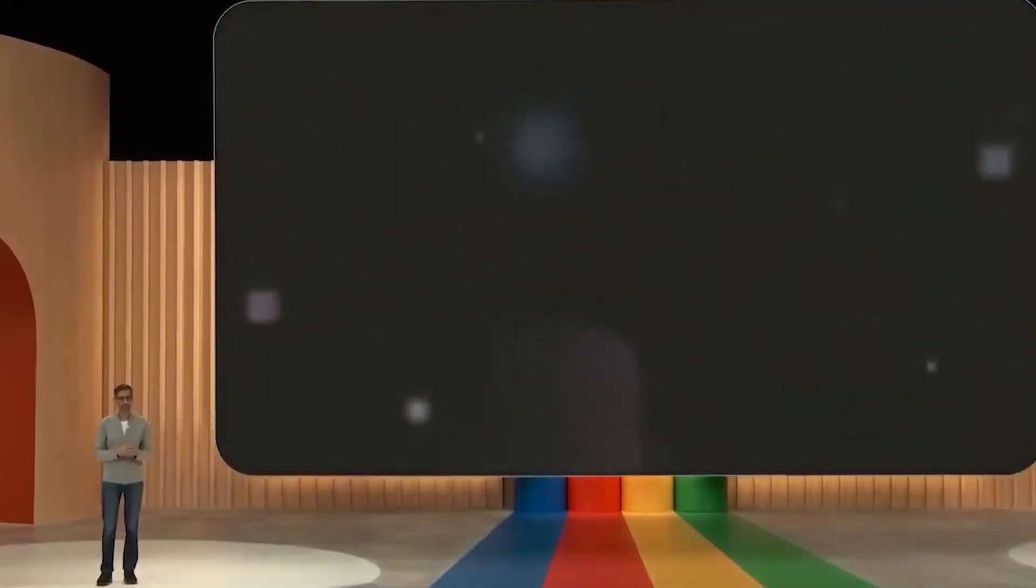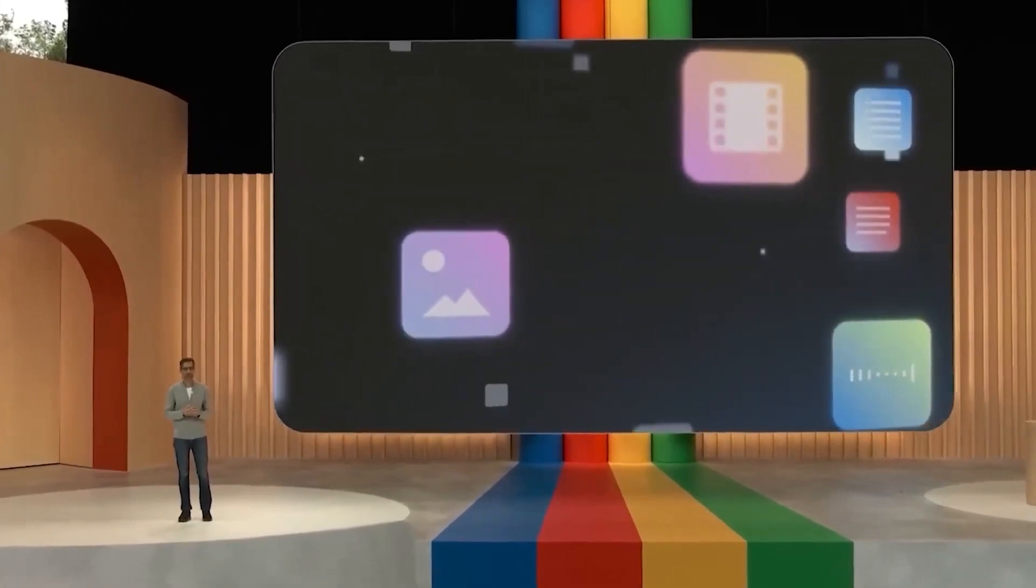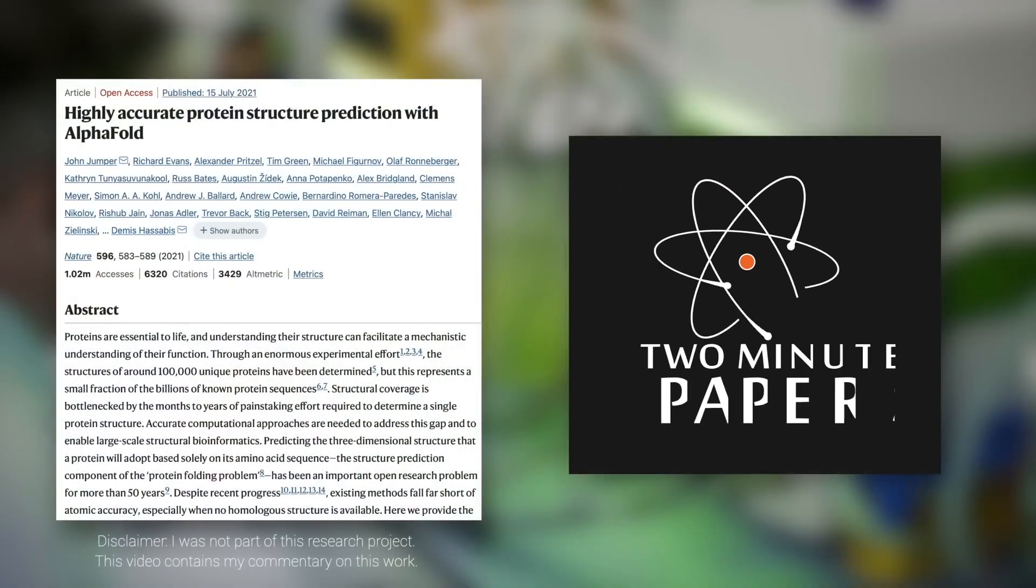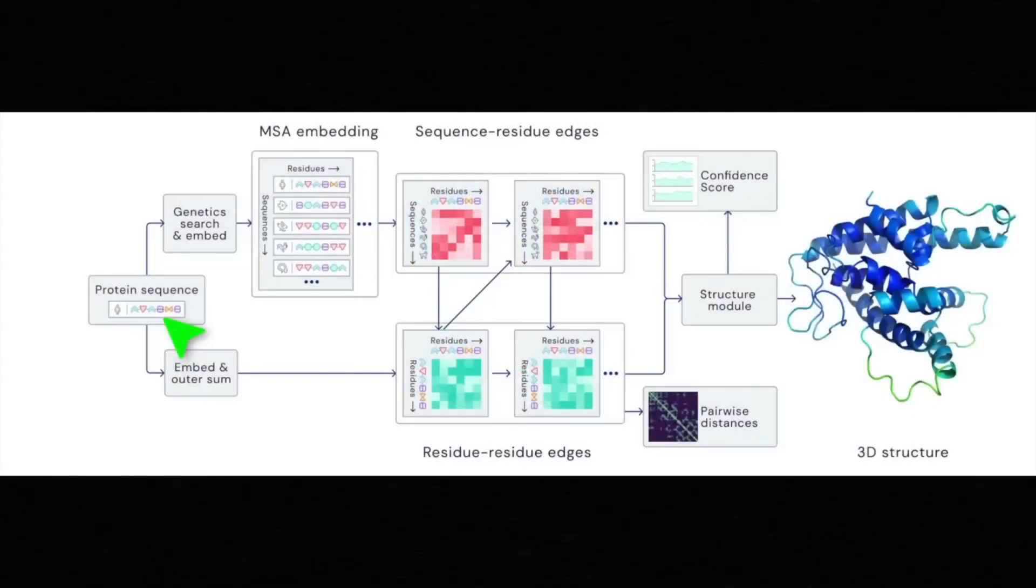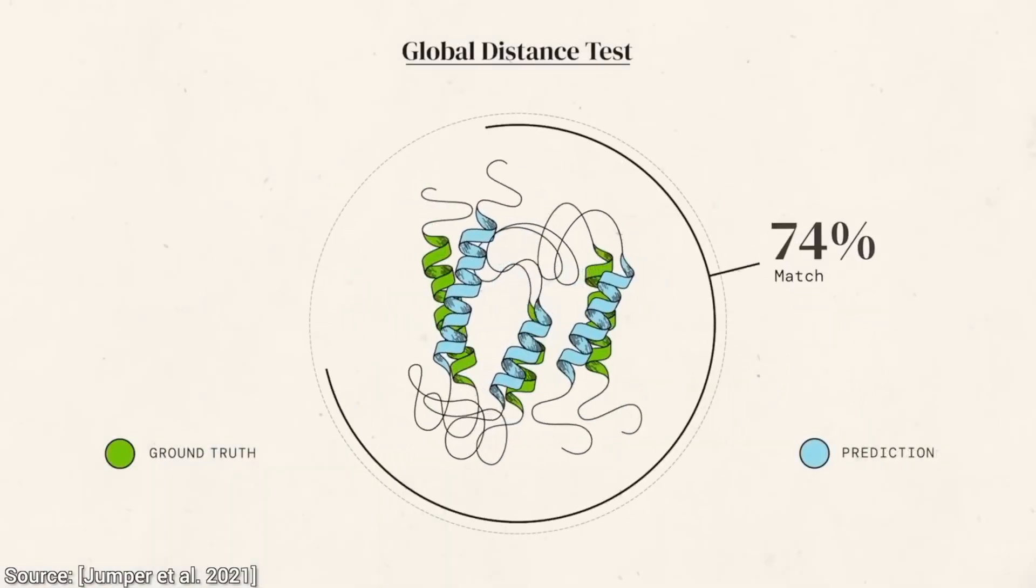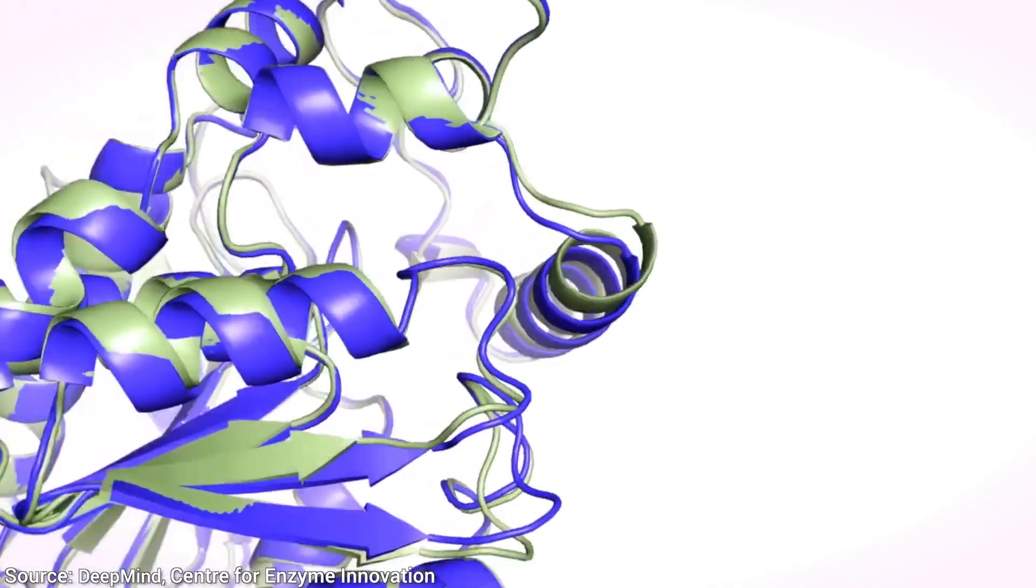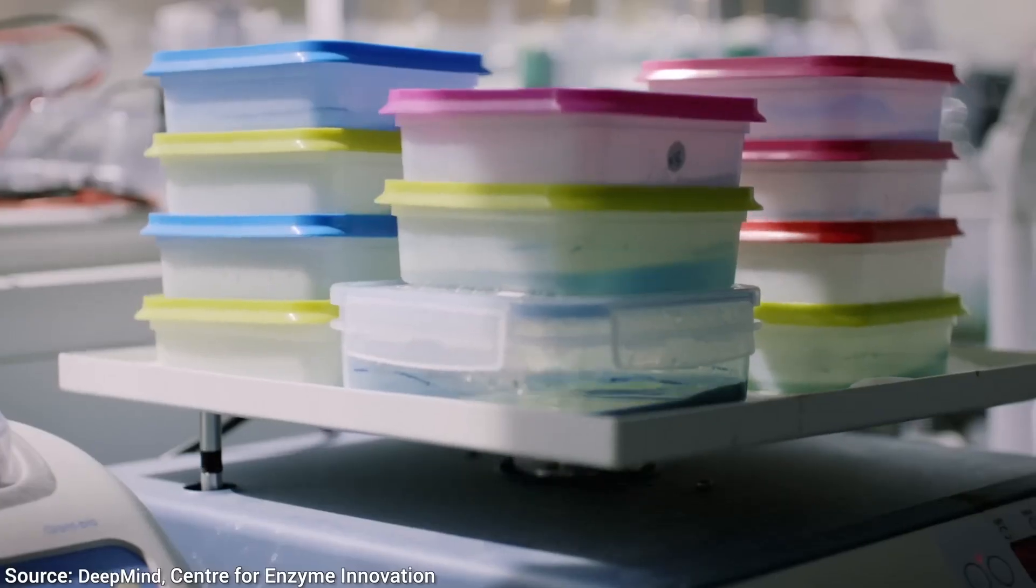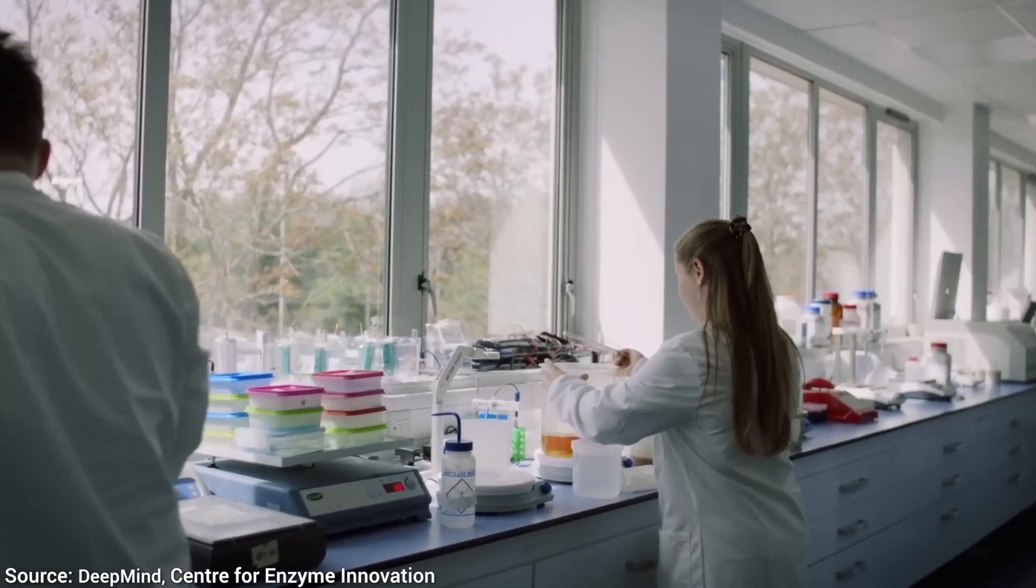This achievement garnered widespread attention for several reasons. First, understanding protein structures is vital for comprehending their functions and interactions within biological systems. Traditional methods like X-ray crystallography and cryo-electron microscopy, AlphaFold's computational approach offered a groundbreaking alternative. Moreover, it exhibited remarkable accuracy, surpassing other participants in the critical assessment of protein structure prediction competition. This competition allows researchers to assess their prediction methods, making AlphaFold's exceptional performance all the more significant. The impact of AlphaFold extended to fields such as drug discovery, bioengineering, and disease mechanisms. Its ability to predict protein structures with such precision accelerates the development of new drugs, aids in identifying drug targets, and enhances understanding of protein-protein interactions involved in diseases. Undoubtedly, this achievement has reshaped the fields of biology and medicine.